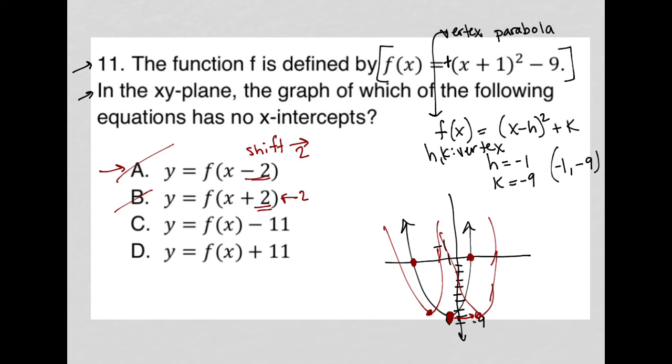Choice C says that I shifted down 11 units. If I went down 11 more units to negative 1, negative 20 for my vertex, it's still going to go upward, so it's still going to touch the x-axis and have two x-intercepts. So that's gone.